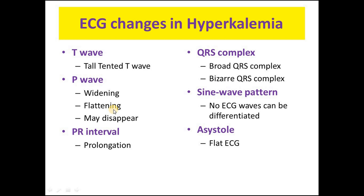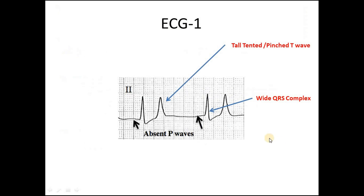Now we'll look at some ECGs showing changes related to hyperkalemia. In this first ECG, there is a tall tented T wave and absence of the P waves. You can also see a wide QRS complex. These are the typical findings in the ECG of a patient with hyperkalemia.